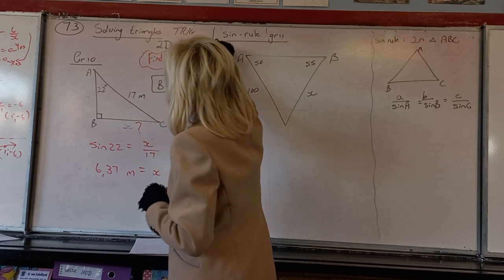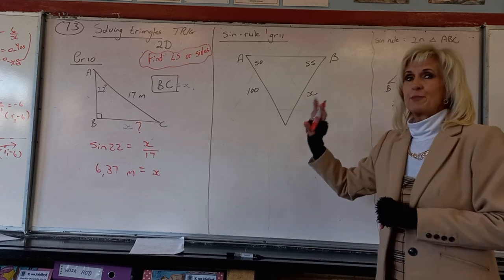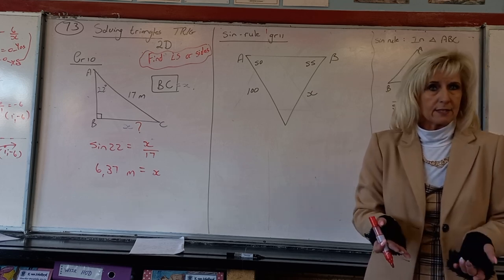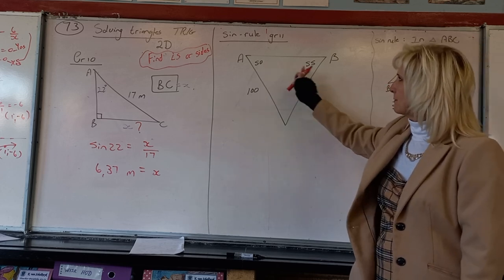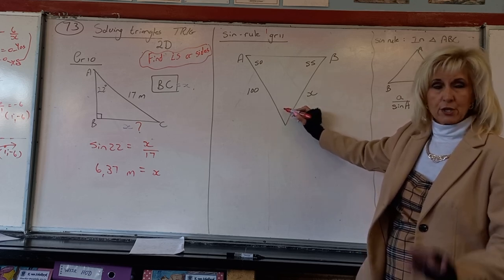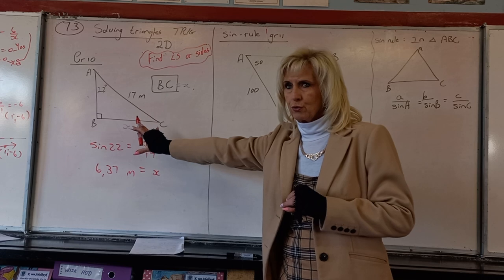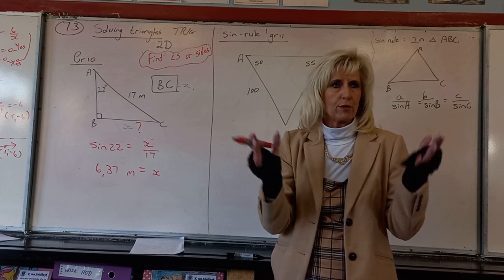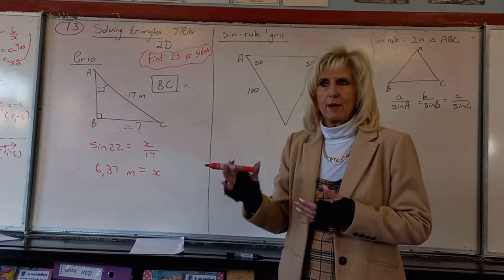In Grade 12, it's three-dimensional but the same principles apply. Now if I ask you to find the side in a non-right-angle triangle — where the angles give you 105° and 75° — you can't use Grade 10 tools, because sin, cos, and tan with a hypotenuse only apply when you have a 90° angle. Without a right angle, there is no hypotenuse.